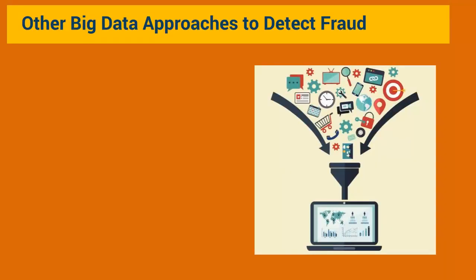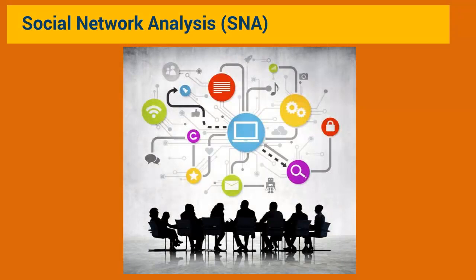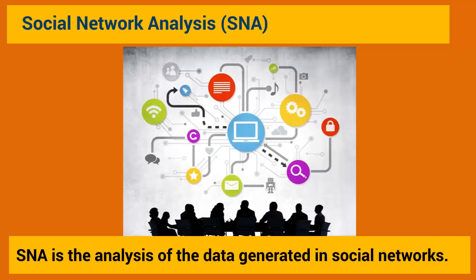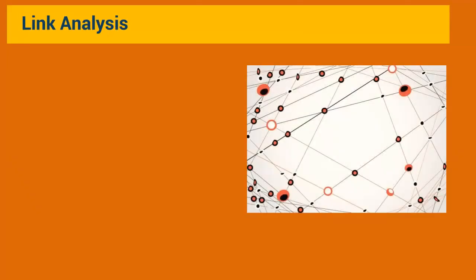Some other powerful big data approaches for detecting frauds are social network analysis and social customer relationship management (CRM). Social network analysis, simply termed as SNA, is one of the more innovative fraud detection methods. It refers to the analysis of data generated in social networks. SNA can be used along with big data to identify and detect frauds. The SNA tool uses a mix of analytical methods, including statistical methods, pattern analysis, and link analysis, to uncover large amounts of data and show relationships.